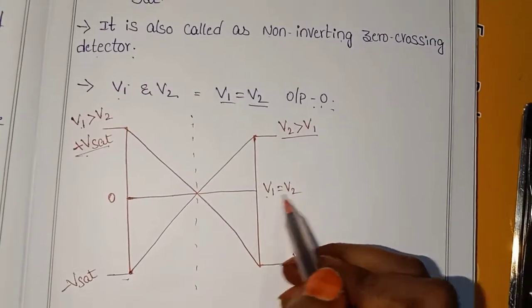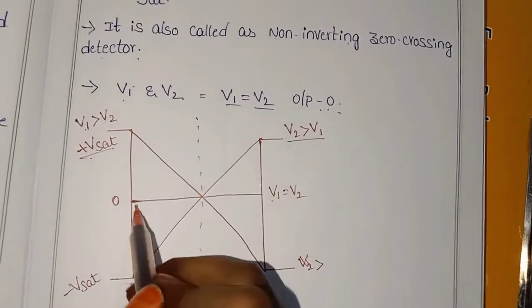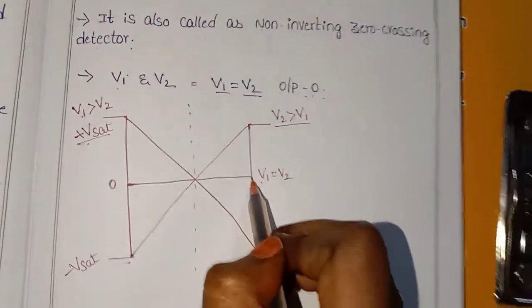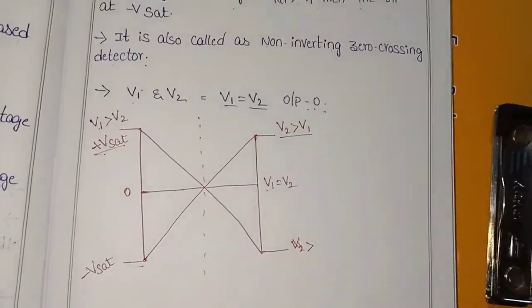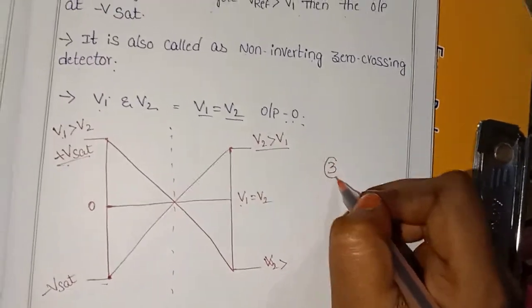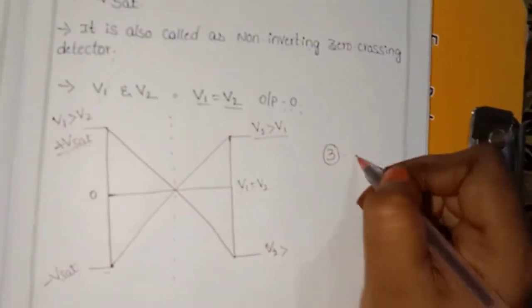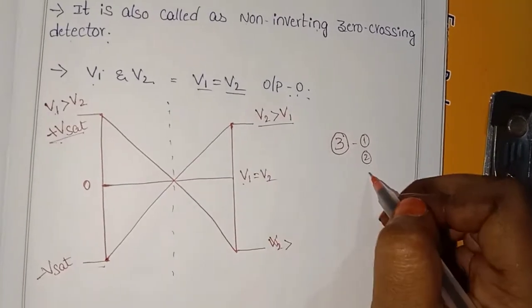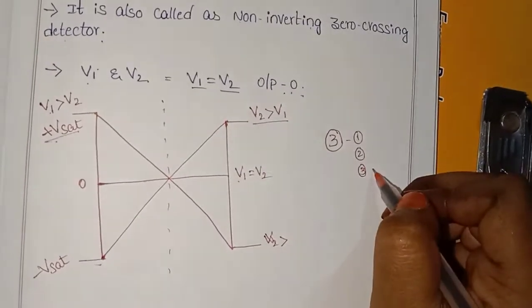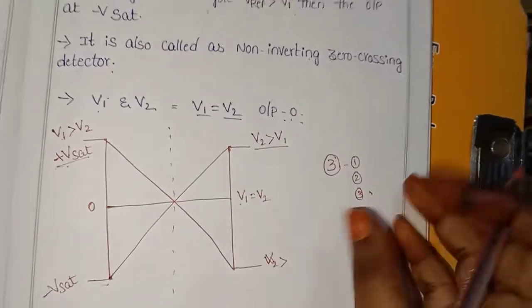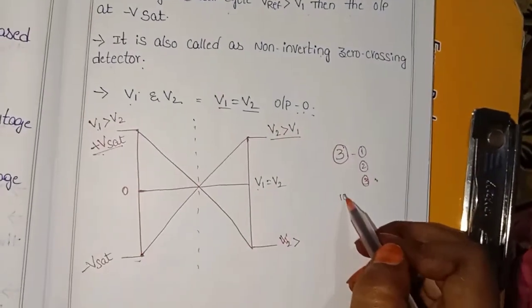If V1 is equal to V2, the output will be zero. So the comparator has three cases: inverting, non-inverting, and when the two inputs are equal. This is important for exams — comparator carries 10 marks.